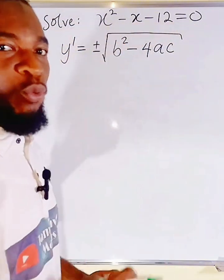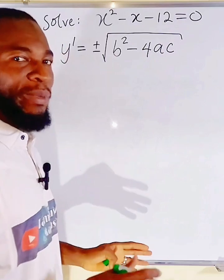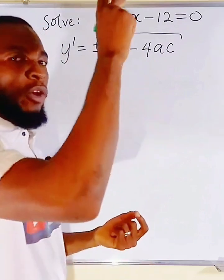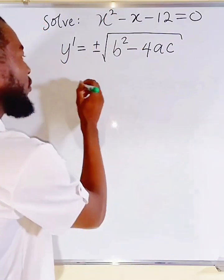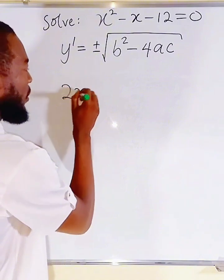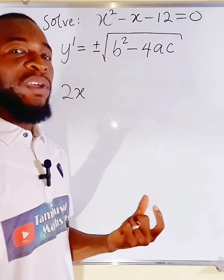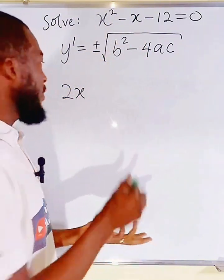If you differentiate x squared, 2 will drop down to multiply x. You have 2x. Power of 2 will reduce by 1. So, we have just 2x.